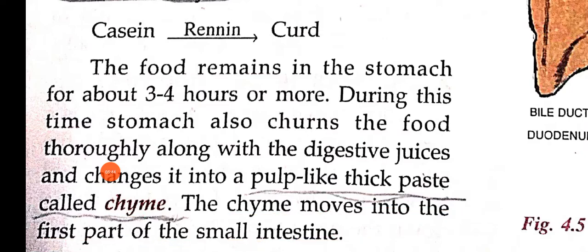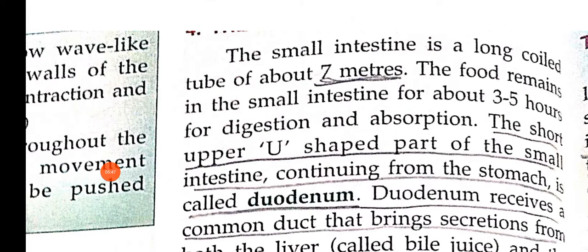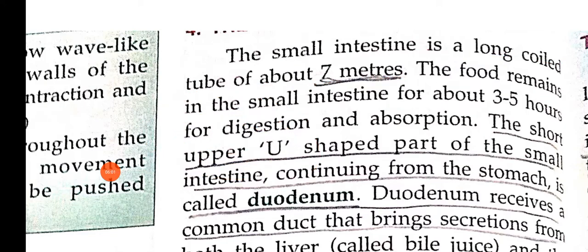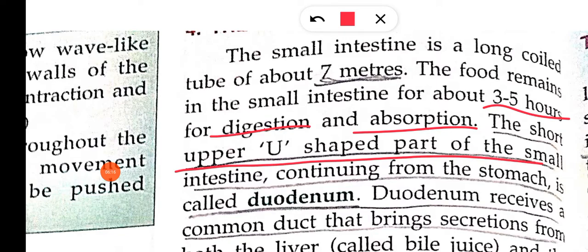Next is the small intestine. The small intestine is a long coiled tube, approximately 7 meters long. The food remains in the small intestine for about 3 to 5 hours for digestion and absorption. The short upper U-shaped part of the small intestine continues from the stomach.